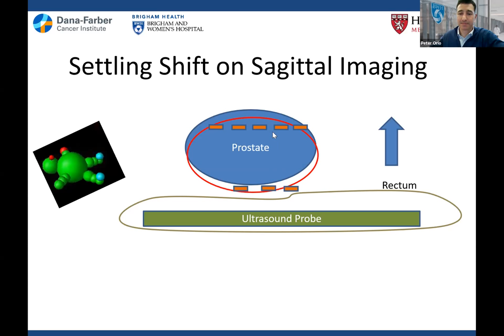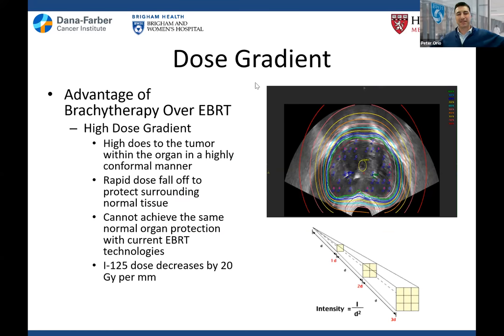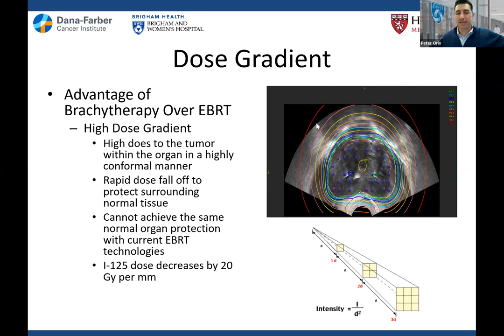Prostates can settle or drift — if you're just on autopilot not paying attention, you can put seeds where you don't want them. These are cautionary tales, but before you panic, brachytherapy is relatively forgiving because of dose gradients. With Iodine-125, you're decreasing dose by 20 Gy per millimeter — so if you're offset by a few millimeters, most of the dose has dropped off anyway. That's one advantage: inverse square law is our friend. We're giving dose exactly where we need it, not from the outside in.